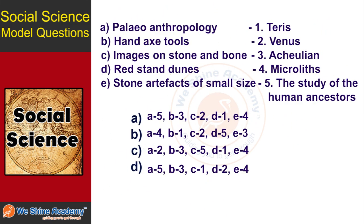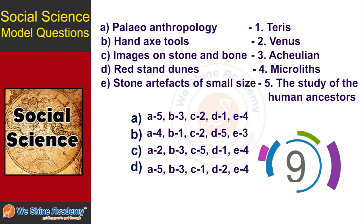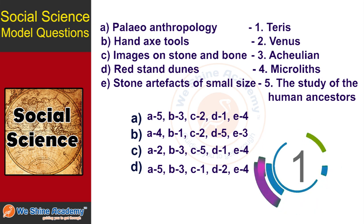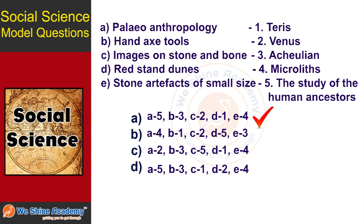The next question is a matching question. Option A: Paleoanthropology; Option B: hand axe tools — Acheulian; Option C: images on stone and bone — cave art; Option D: microliths — small stone artifacts; Option E: stone artifacts of small size — the study of human ancestors. The answers are: A-5, B-3, C-2, D-1, E-4.